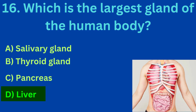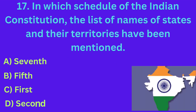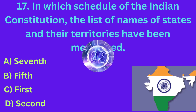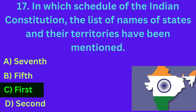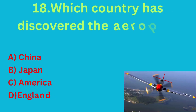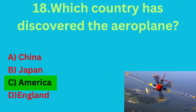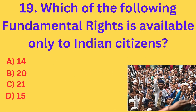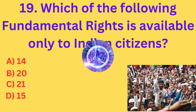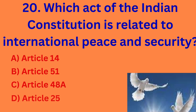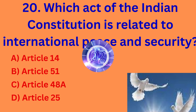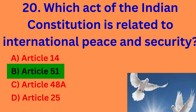Which is the largest gland of the human body? The correct answer is option D: Liver. In which schedule of the Indian constitution has the list of names of states and their territories been mentioned? The correct answer is option C. Which country discovered the aeroplane? The correct answer is option C: America. Which of the following fundamental rights is available only to Indian citizens? The correct answer is option D. Which article of the Indian constitution is related to international peace and security? The correct answer is option B: Article 51.